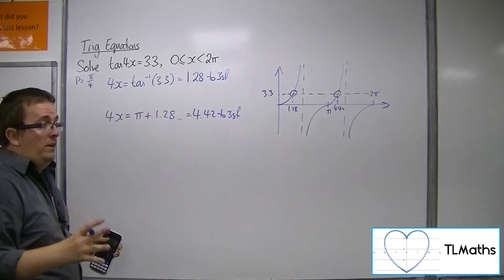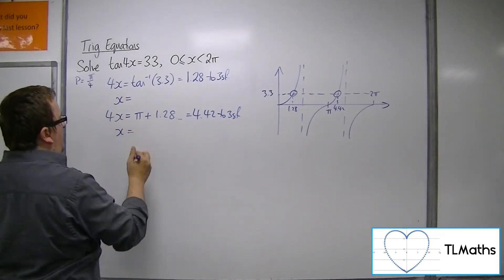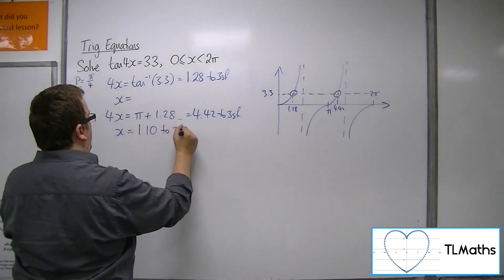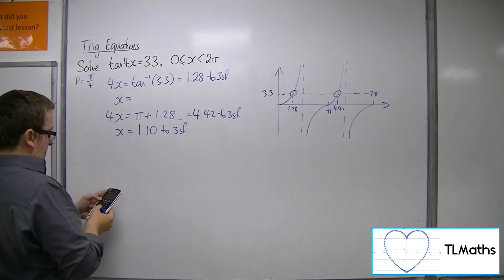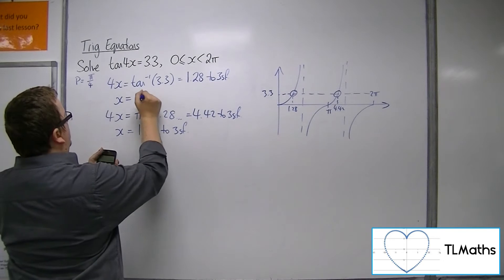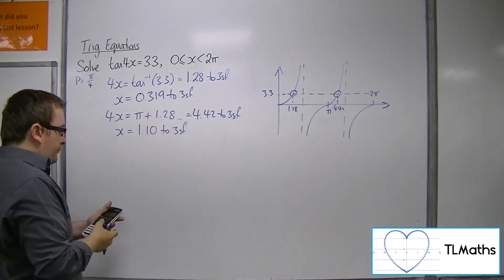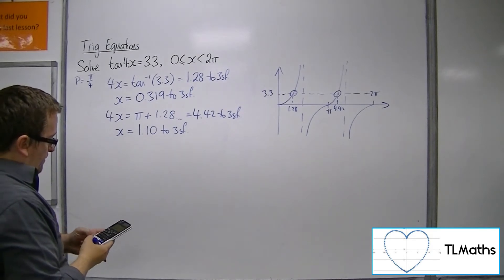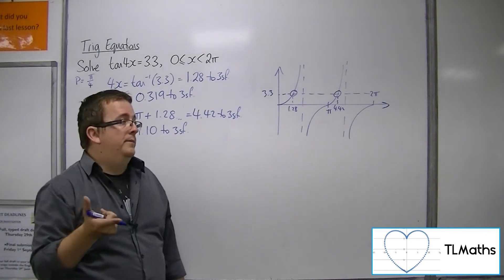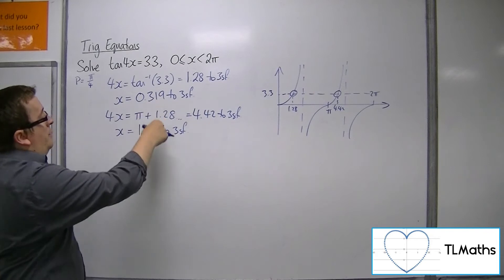Now we can apply the transformation. Dividing both sides by 4, we get 1.10 to 3 sig fig. And inverse tan of 3.3 divided by 4 is 0.319. These two solutions are going to be pi over 4 apart, just in the way that those are pi apart — these are pi over 4 apart.